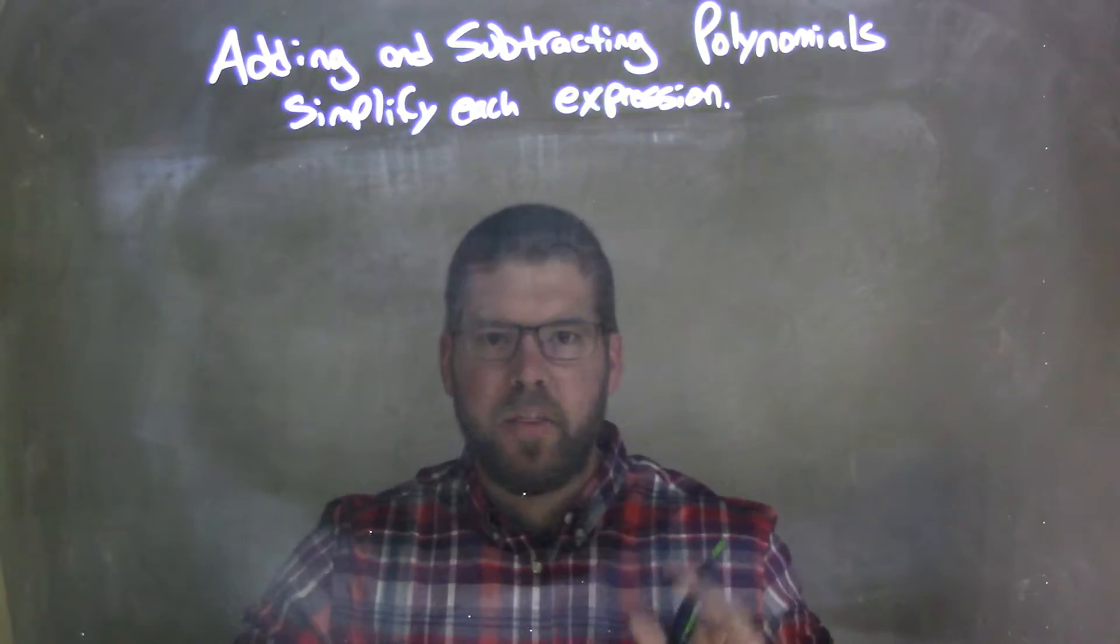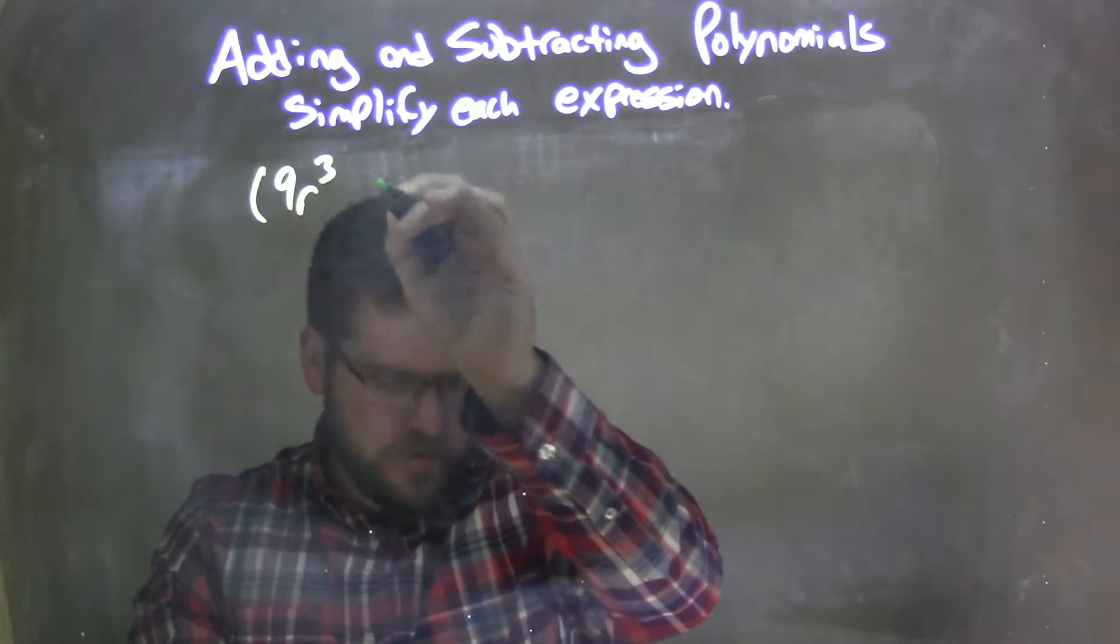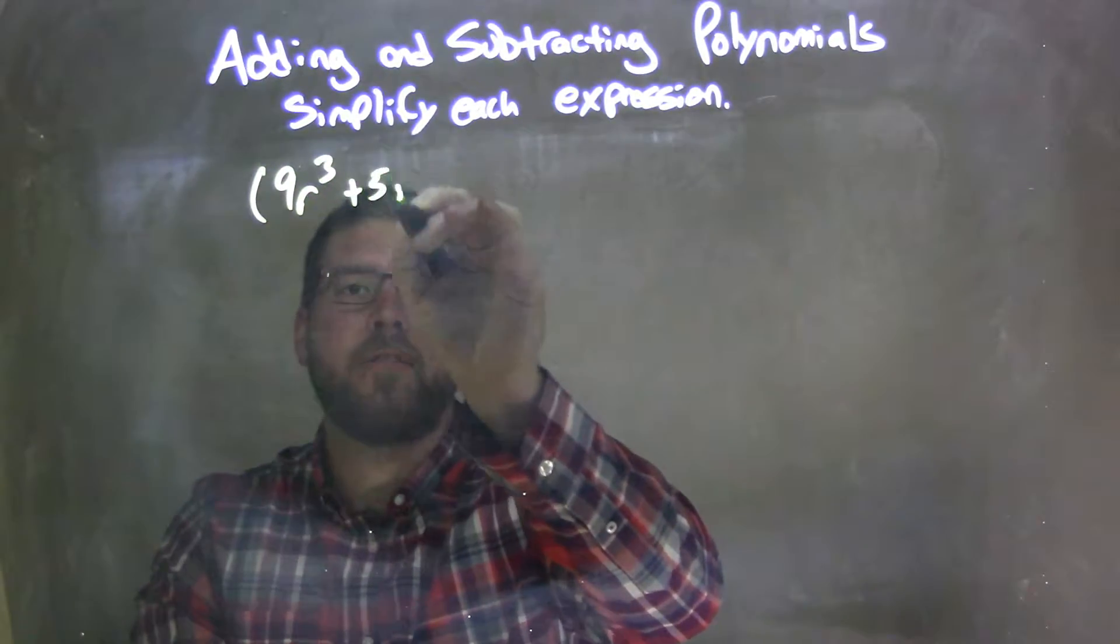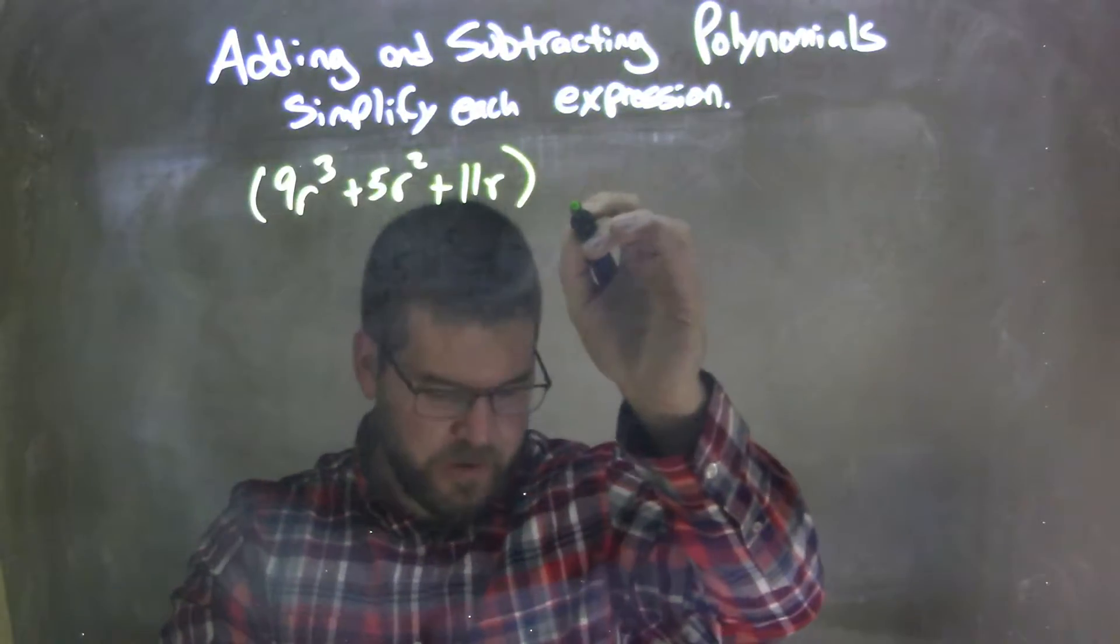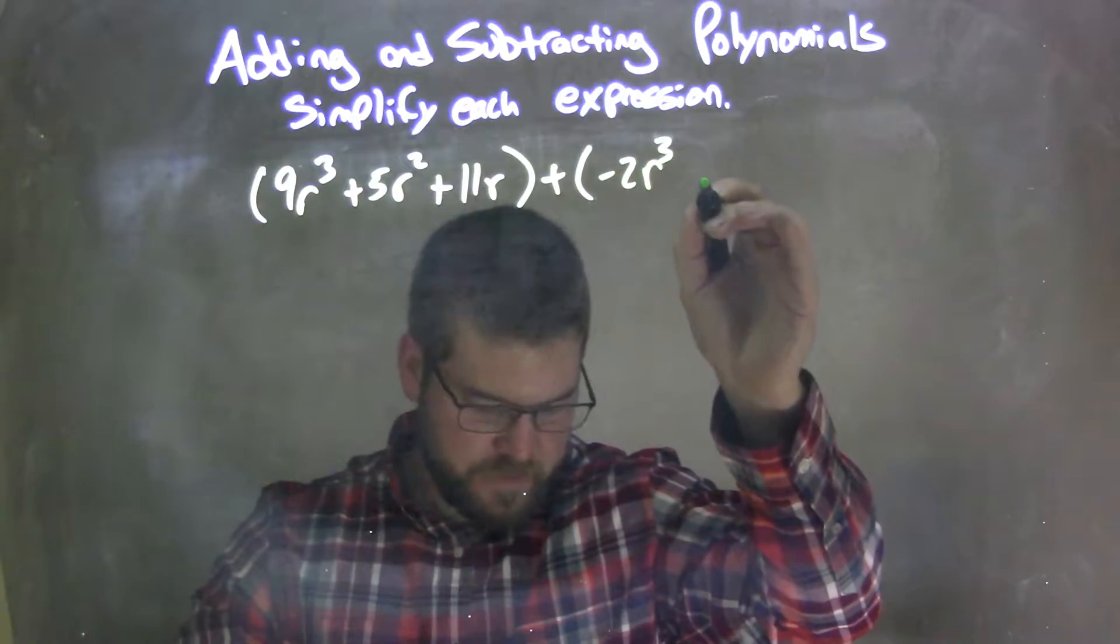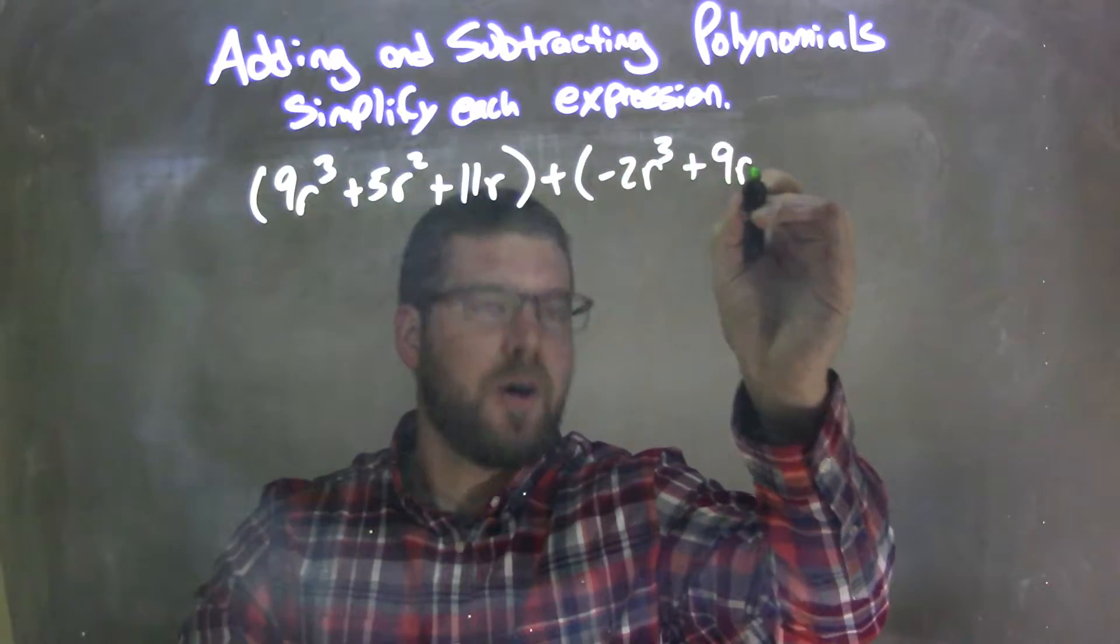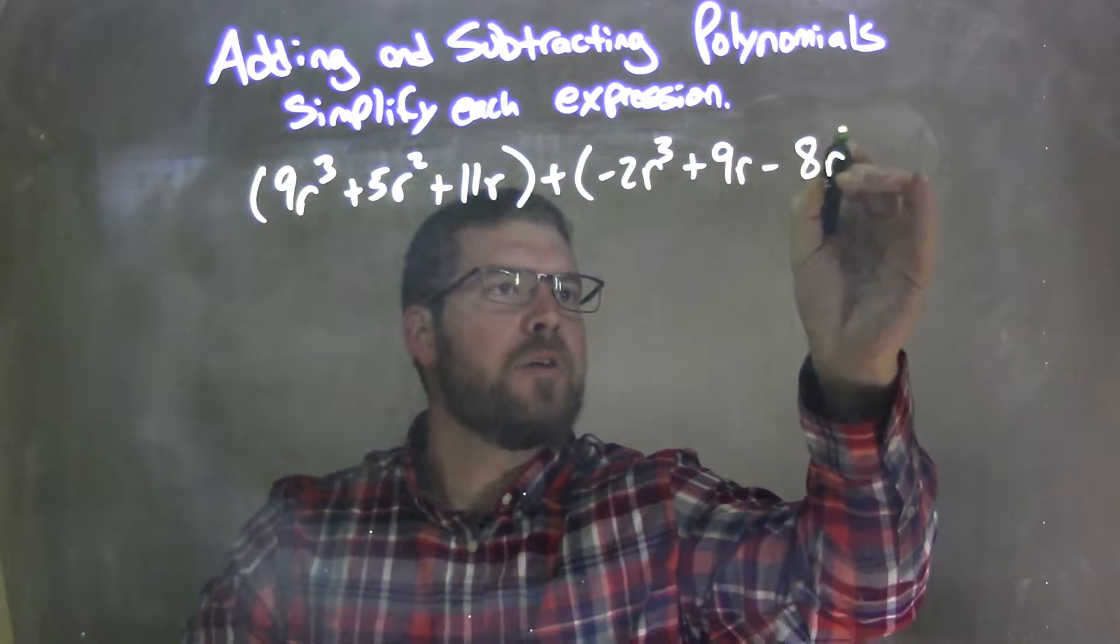So if I was given this polynomial: 9r³ (and this is in parentheses) plus 5r² plus 11r, plus parentheses negative 2r³ plus 9r minus 8r².